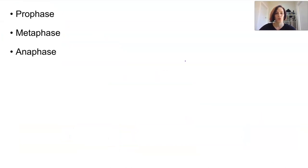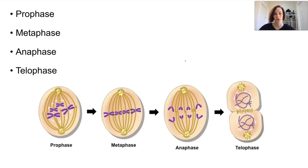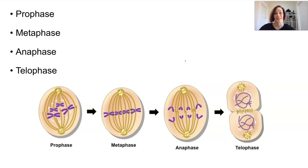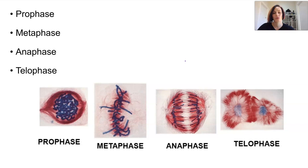Mitosis occurs in four stages. After interphase we have prophase, metaphase, anaphase, and telophase, before the entire cell is split in a process known as cytokinesis. The nucleus divides first, and then cytokinesis splits the entire cell contents. These processes are also visible under the microscope in many forms.